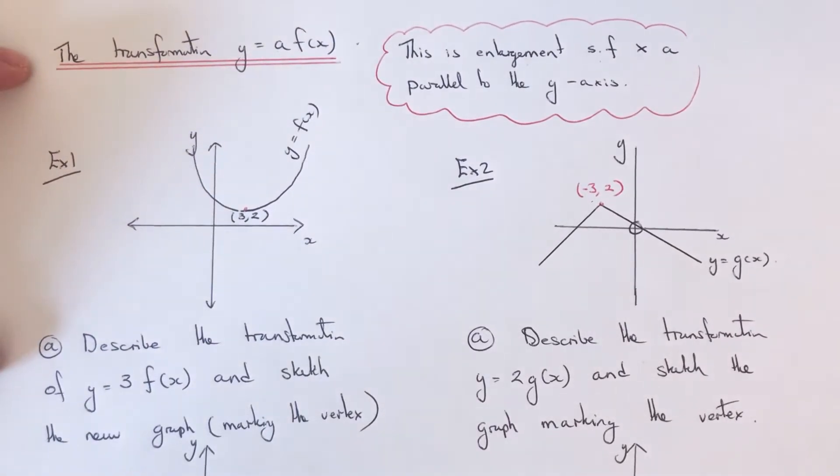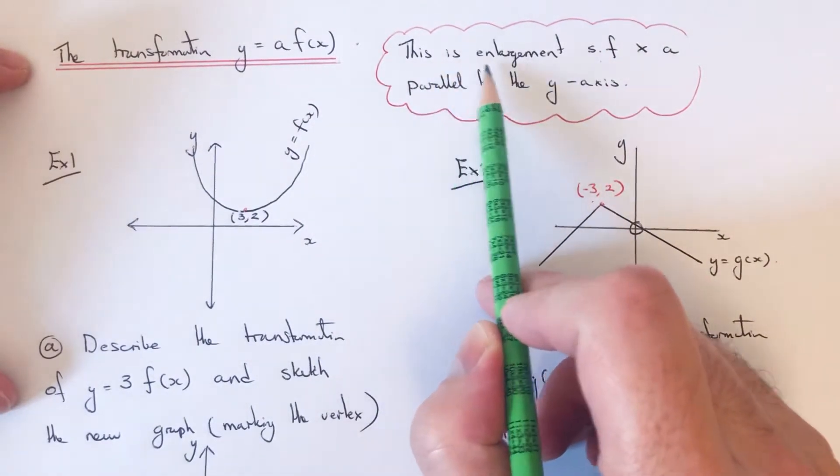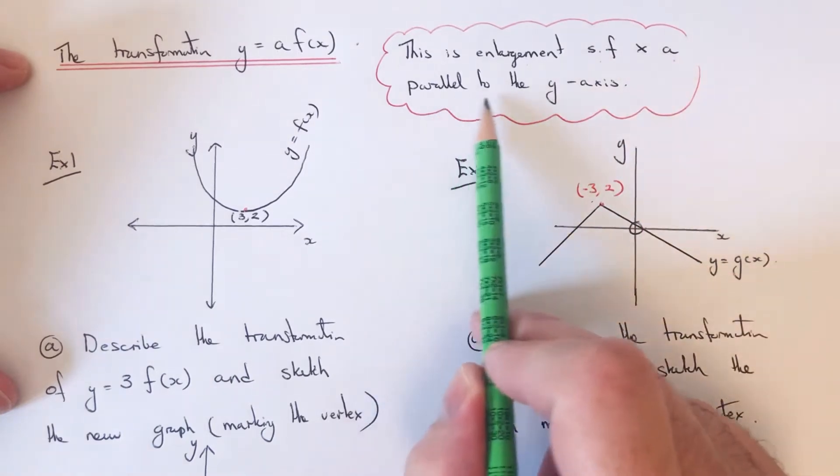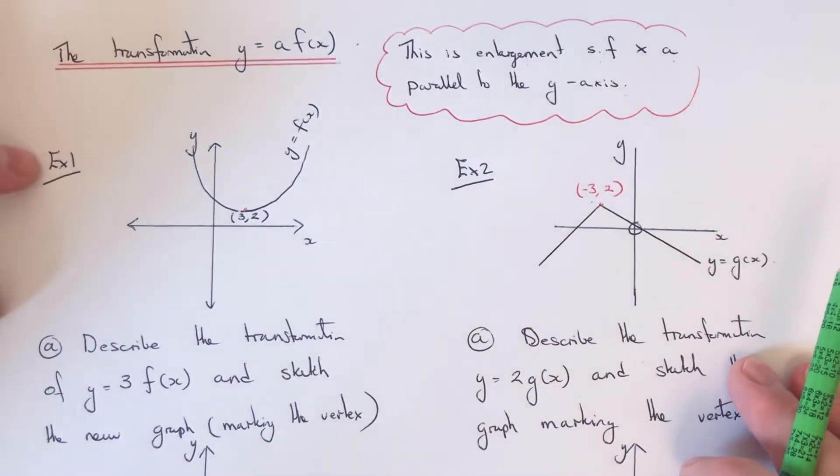Hi guys, welcome back. This is Maths 3000. Today I'm going to show you the transformation y equals a f of x. This transformation is an enlargement with scale factor times a, parallel to the y-axis. So let's show this on the two examples which we have here.